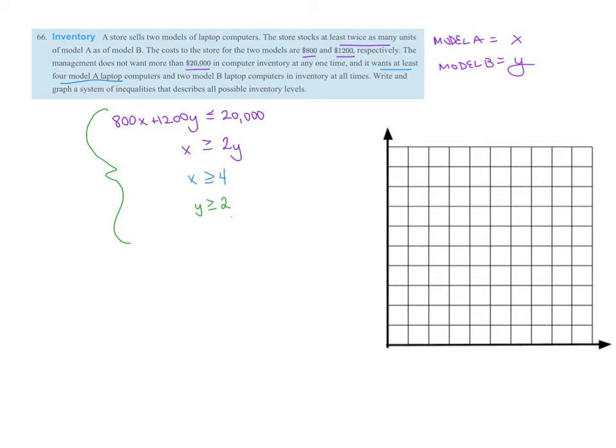And so now we have to get to graphing. So let's simplify this. I think I can divide by 400 from the top equation. So 2X plus 3Y is less than or equal to 50. And then X is greater than or equal to 2Y. Let me rewrite that. Y is less than or equal to 1 half X. And I have X is greater than or equal to 4, and Y is greater than or equal to 2.